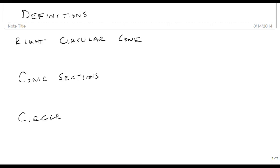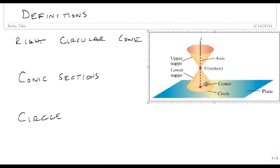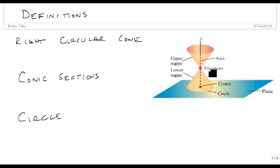We are now going to provide some definitions related to conic sections. The way we're going to start is by looking at what's called a right circular cone. So that's what this is right here.